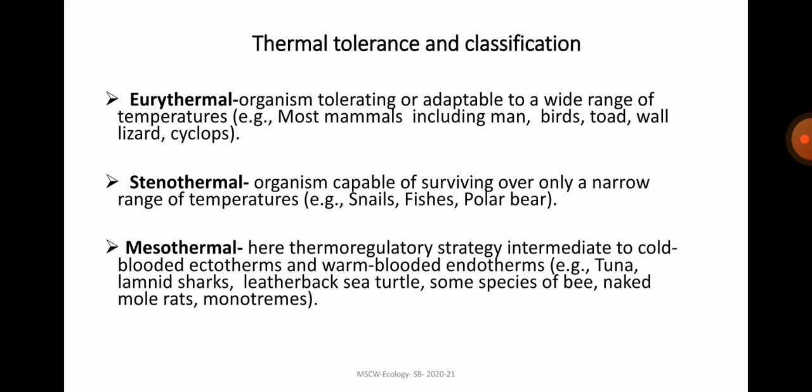Animals are classified based on temperature tolerance into eurythermal, stenothermal and mesothermal organisms. Eurythermal animals tolerate a wide range of temperature — for example, most mammals including humans, birds, toads, wall lizards and Cyclops. Stenothermal organisms survive over only a narrow range of temperature — for example, snails, fishes and polar bears. Mesothermal forms have a thermoregulatory strategy intermediate to cold-blooded ectotherms and warm-blooded endotherms — for example, tuna, lamnid sharks, leatherback sea turtles, some species of bees, naked mole rats and monotremes.